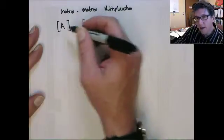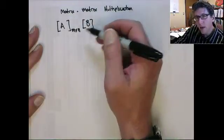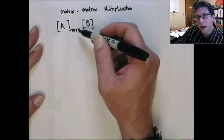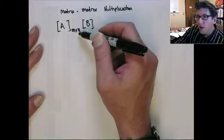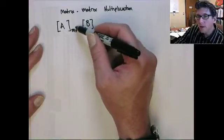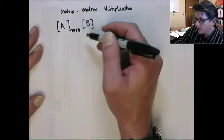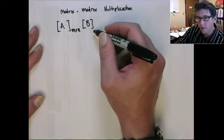The way we do matrix-matrix multiplication is... If we want to do A times B, and A is an M by N matrix. So the rule is the number of columns in the first matrix has to equal the number of rows in the second matrix.